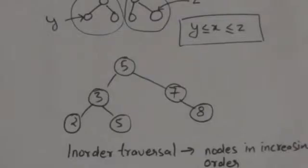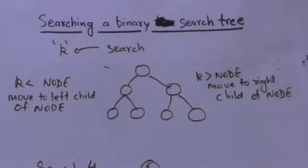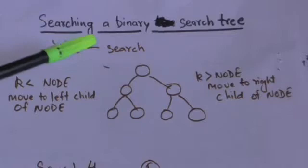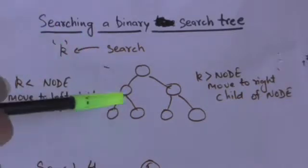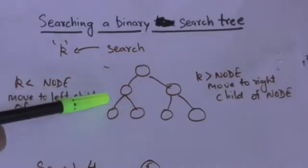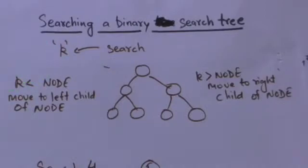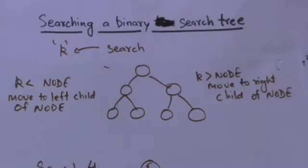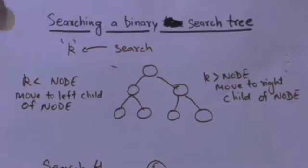The next topic is searching a binary search tree. Suppose we have to search a node with a given value k. We start from the root node and for each node encountered, we compare k with the value stored in the node. If they are equal, the search terminates. If k is smaller, we move to the left child. If k is greater, we move to the right child.